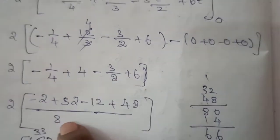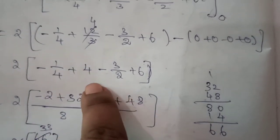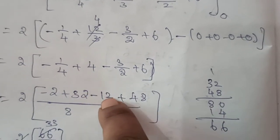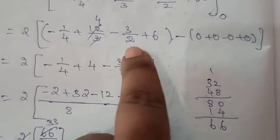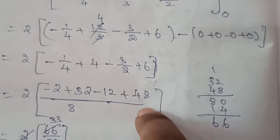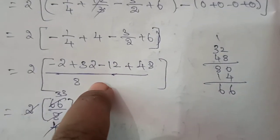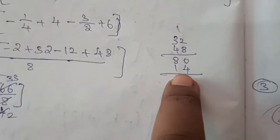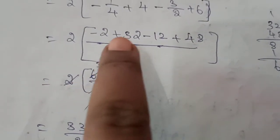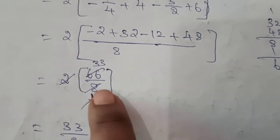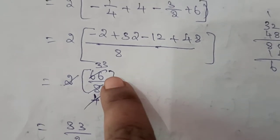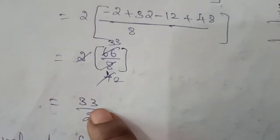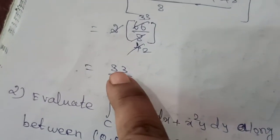Taking LCM of 8: numerator becomes 32 plus 48 minus 2 minus 12. Adding positive values: 80. Adding negative values: minus 14. So 80 minus 14 equals 66. That is 2 times 66 divided by 8. Cancelling 2: 66 divided by 4, which becomes 33 divided by 2. This problem's answer is 33 divided by 2.